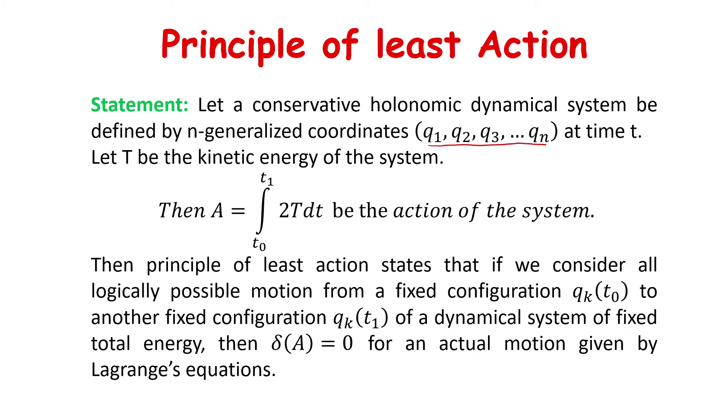Then A equals the integral from t0 to t1 of 2T dt, which is the action of the system. The principle of least action states that if we consider all logically possible motions from a fixed configuration qk(t0) to another fixed configuration qk(t1) of a dynamical system of fixed total energy, then δA equals zero for an actual motion given by Lagrange's equations.